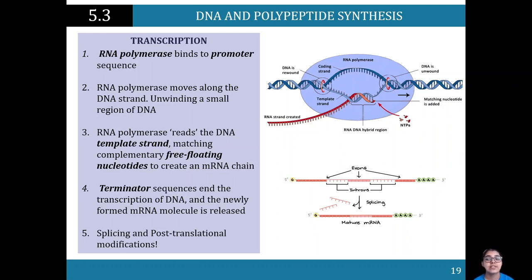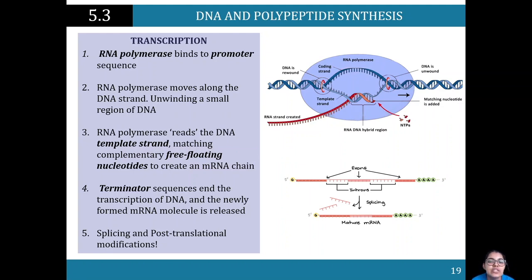Once the RNA polymerase reads the DNA template strand and matches complementary free-floating nucleotides, it creates an mRNA chain. mRNA stands for messenger RNA — it's basically carrying a message. Once the process is done, a terminator sequence ends the transcription of the DNA. That terminator sequence stops the process, because we are only taking the specific sequence we need to make our protein.